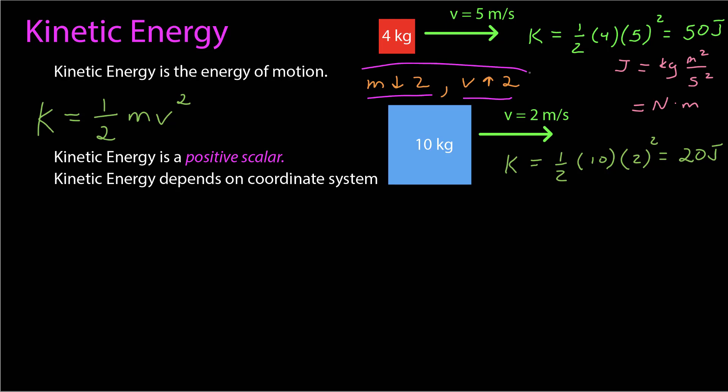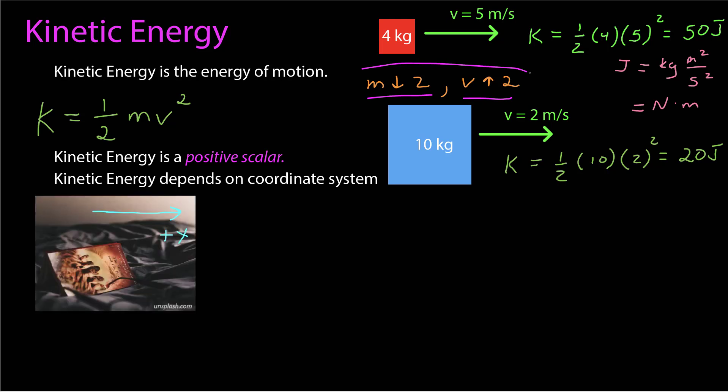The final point, which I don't think a lot of students realize, is that kinetic energy depends on the coordinate system, because it depends on your velocity and speed, which itself is measured relative to a coordinate system. For example, what is the kinetic energy of this book? Well, it's sitting here on a bed. I establish a coordinate system that's fixed relative to the room, and it's at rest. Its speed is zero, so its kinetic energy is zero.